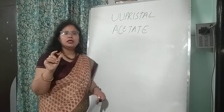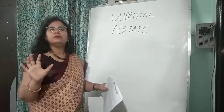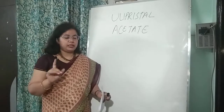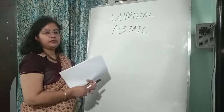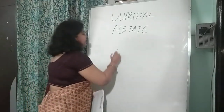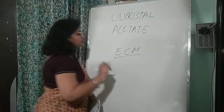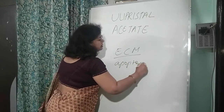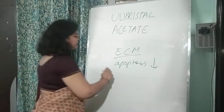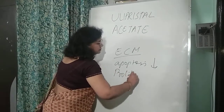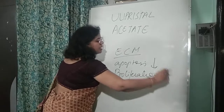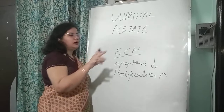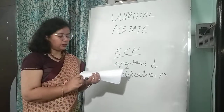A brief discussion on leiomyoma: we all know it is a monoclonal proliferation of the smooth muscle cells of the uterine musculature. What is extra in leiomyoma is extracellular matrix, because in leiomyoma apoptosis is reduced.